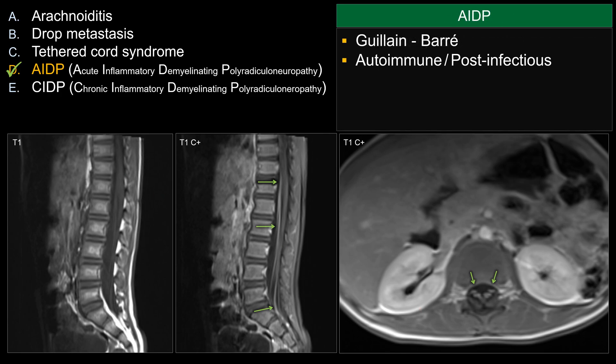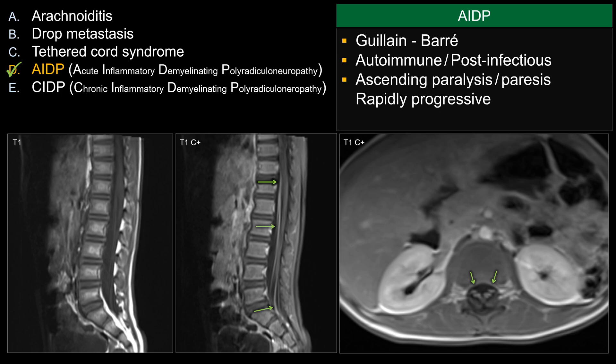AIDP is better known as Guillain-Barré. This is an autoimmune process and often post-viral, so the classic symptom would be a patient presenting with some type of viral infection, perhaps one week before the presentation. The classic symptom is rapidly progressive ascending paralysis, and sometimes the cranial nerves can be involved.